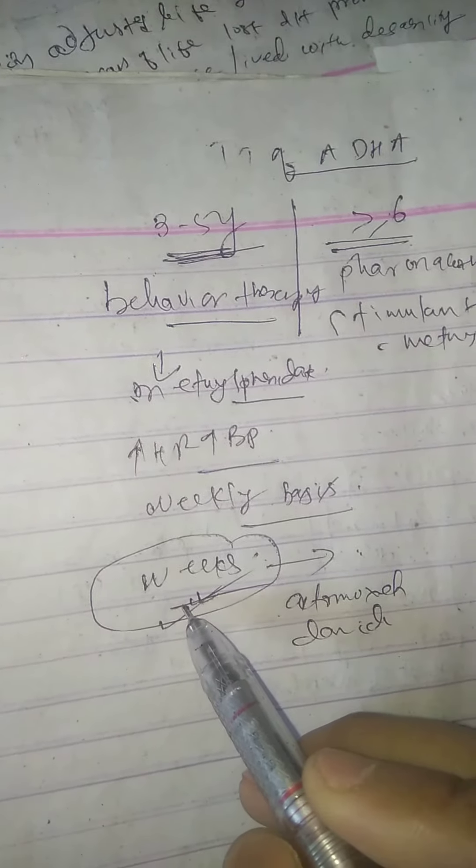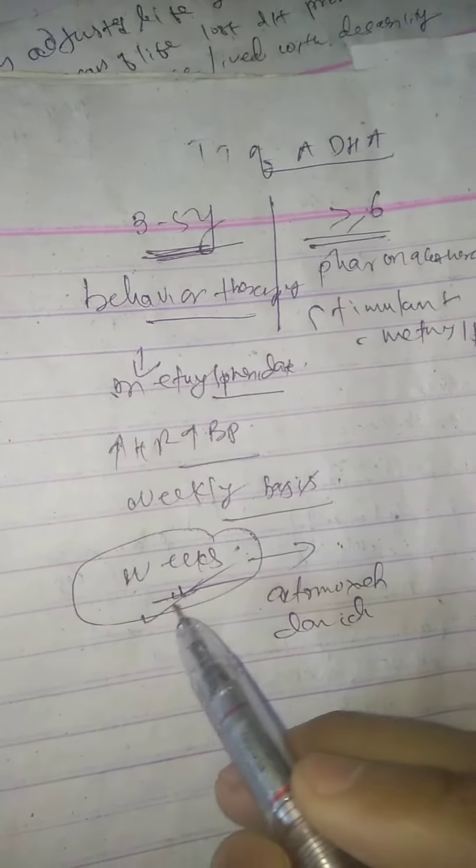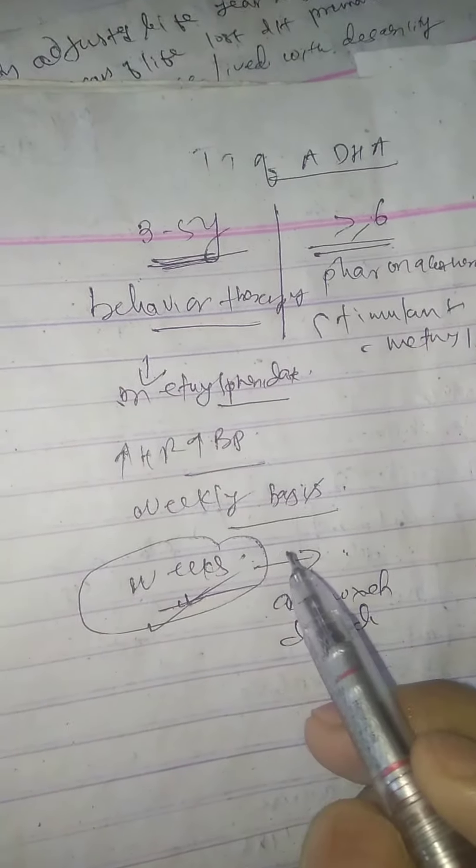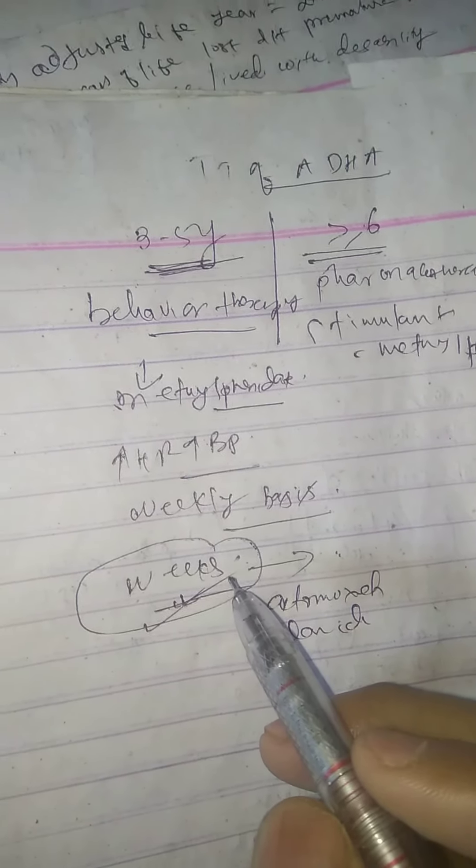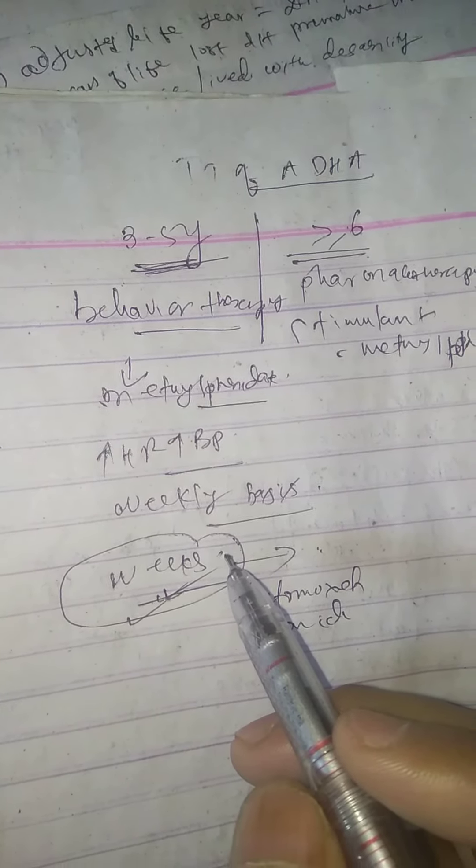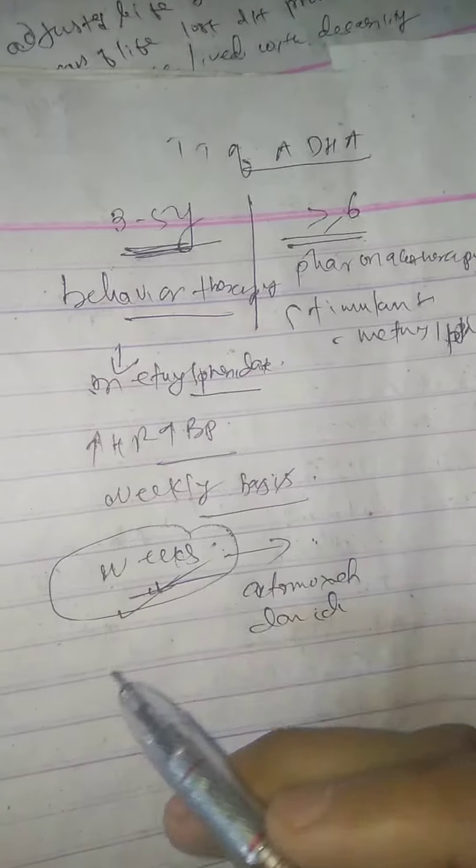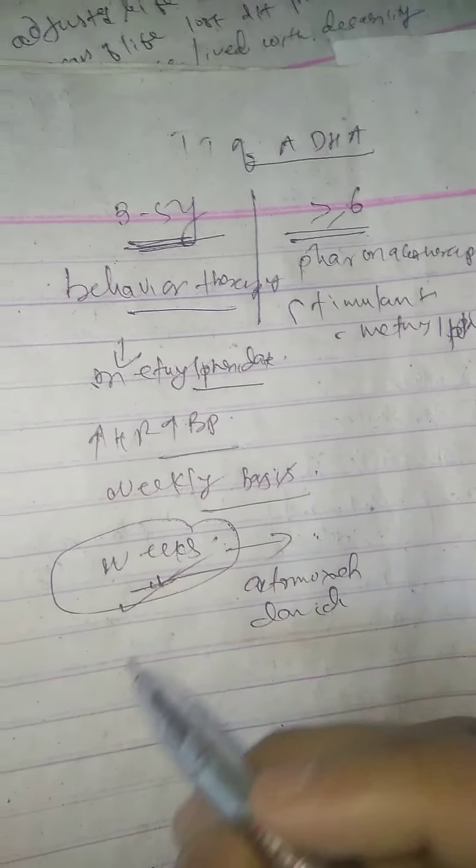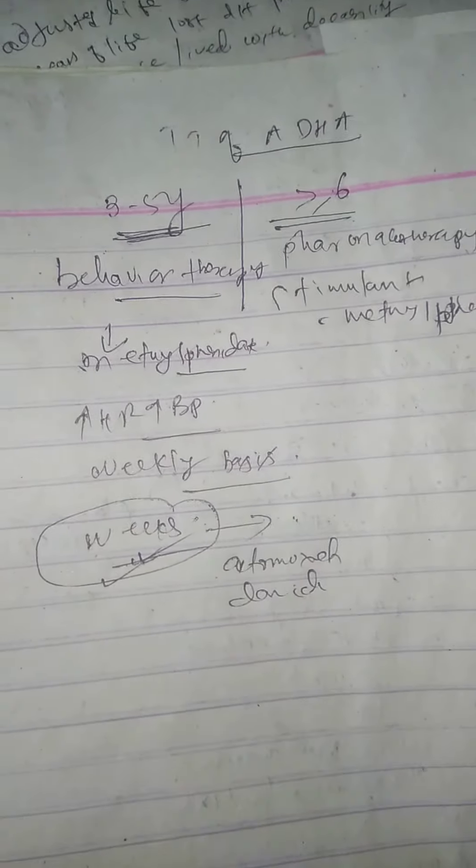If a child is not responding to one stimulant within weeks, then you better switch to another stimulant rather than continuing it. So pharmacotherapy: first we try stimulants, if not responding or side effects then other stimulants, and if again not responding then non-stimulant options like atomoxetine and alpha-2 agonists.